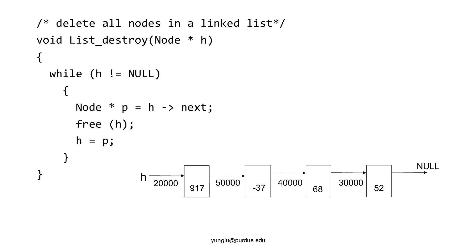This function takes only one argument. h is a pointer and it points to the first node of the linked list. This function does not return anything, thus the return type is void.